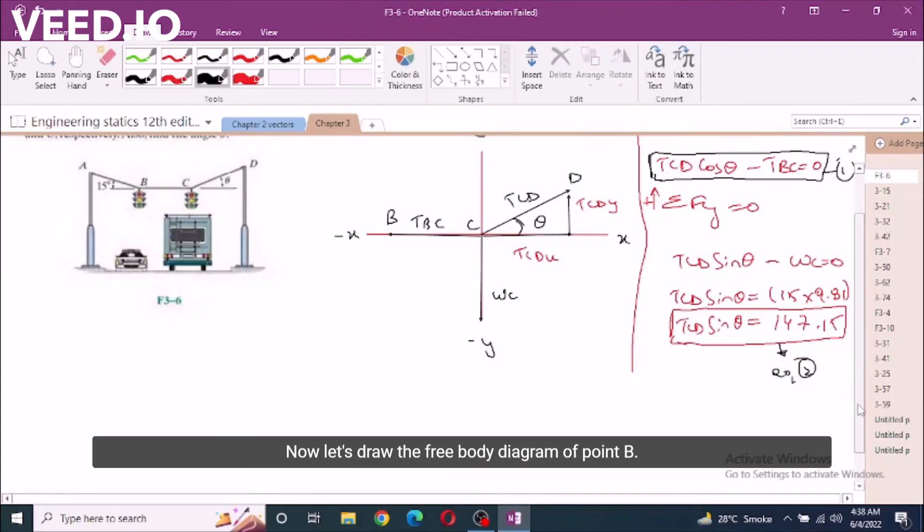Now let's draw the free body diagram of point B so we could obtain two more equations to solve these unknowns.